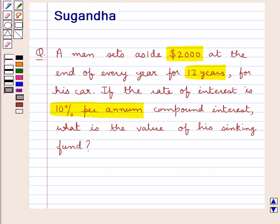First of all we will discuss about the sinking fund. It is a fund which is created by investing some amount annually at compound interest for a certain period. We can also say that it is a fund created to discharge a known future liability.